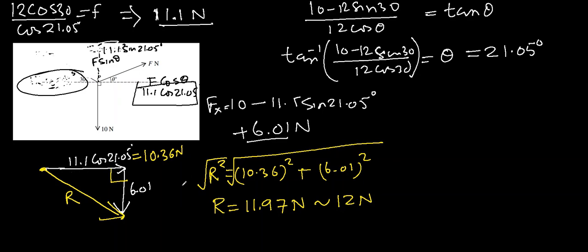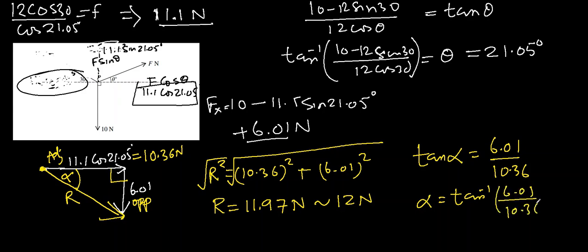Additionally, they are asking us to find the direction of resultant force. The direction of resultant force is always found from the tail. Let's call this angle as alpha at the tail, and we want to find alpha. So I can use this as opposite of alpha, this as adjacent, so I can use tan. Tan alpha will be 6.01 is opposite over 10.36. So alpha comes out to be tan inverse 6.01 over 10.36 and that comes out to be almost 30 degrees. So we can say that the resultant force, the magnitude is 12 Newton and it is making 30 degrees with x direction. And that's done. Thank you.